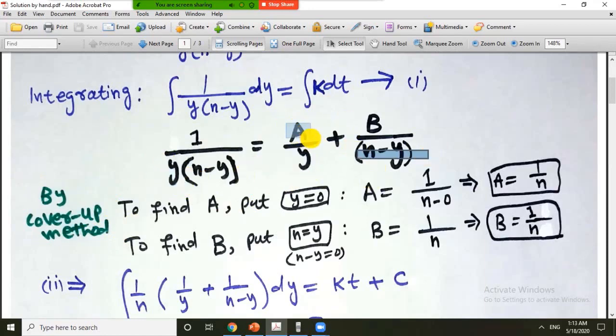By cover up we mean that if we have a divided by the first linear factor, b divided by the second one. So to find a we have to cover up or hide this one and put y is equal to 0 in the remaining expression. The remaining expression is 1 over n minus y, so 1 over n minus 0. This is the value of a.